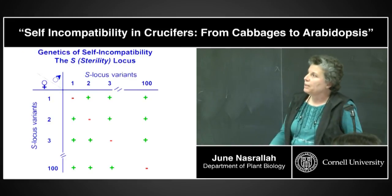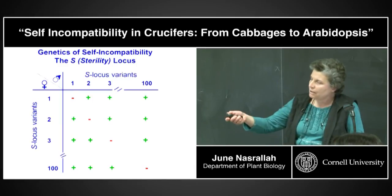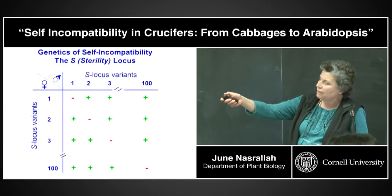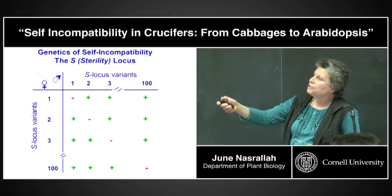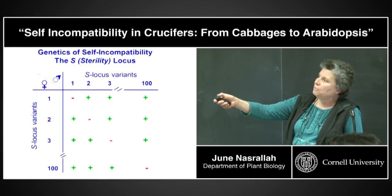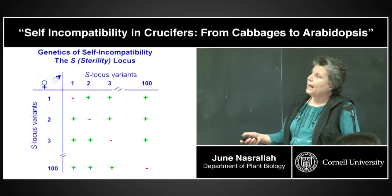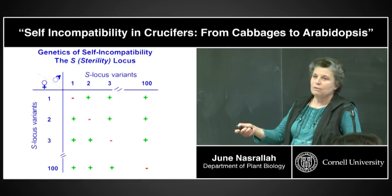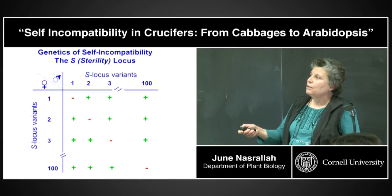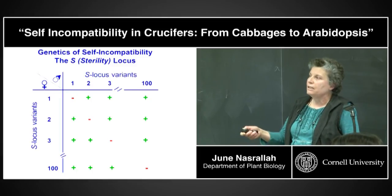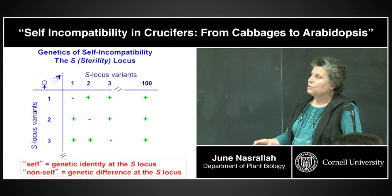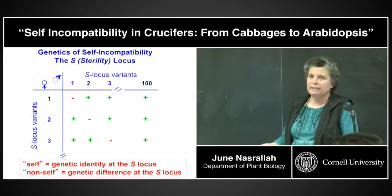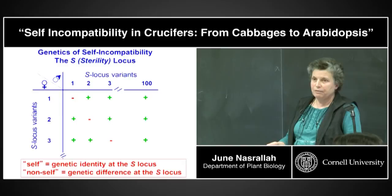The genetics of self-incompatibility is determined by the S-locus, which stands for sterility locus. This locus is extremely polymorphic and there can be up to a hundred variants in any one species. Whenever the pollen and stigma express the same S-locus variant, you get inhibition of pollen. In all other situations, you don't. When I mention 'self,' I mean genetic identity at the S-locus only, and 'non-self' means genetic difference at the S-locus.